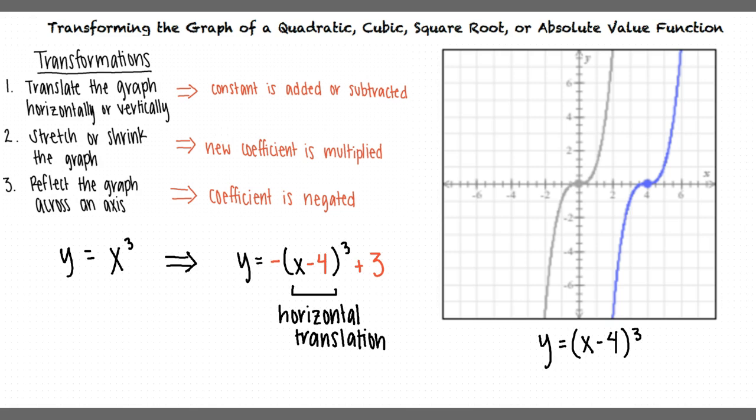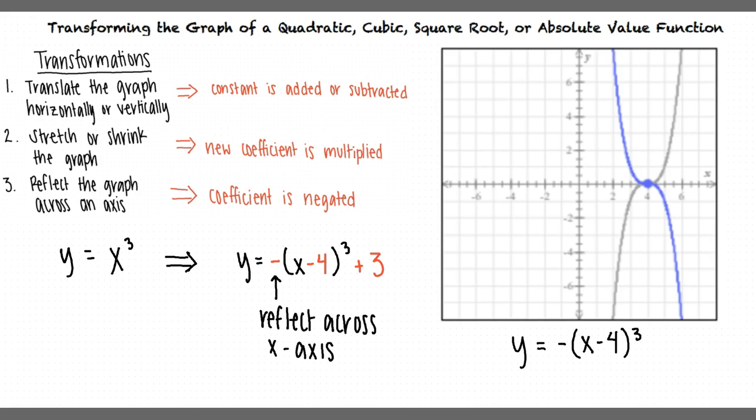Next, we'll look at what happens when we negate that quantity containing the x variable. Since we are negating the x quantity, we will reflect the graph across the x-axis. This results in the graph y equals negative x minus 4 cubed.